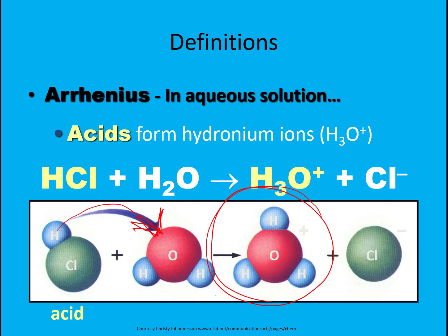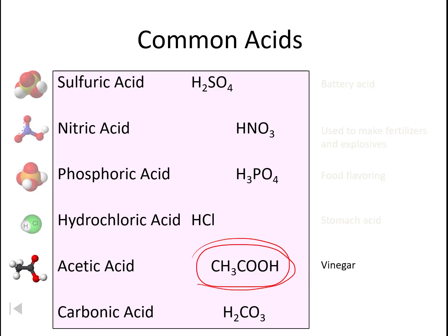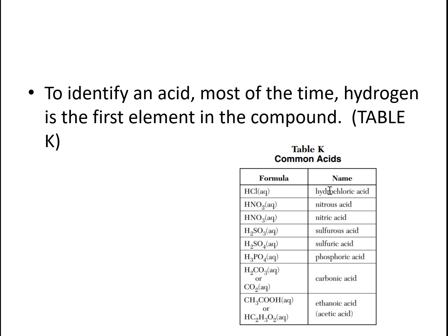There are lots of different Arrhenius acids. Most of these are listed on table K in your reference table. We have things like sulfuric acid, nitric acid, phosphoric acid, hydrochloric acid, acetic acid (also known as vinegar, our most common organic acid), and carbonic acid. Carbonic acid is what you get when you take carbon dioxide and run it through water. To identify an acid, most of the time hydrogen will be the first element in the compound. If you look at table K, you can see this is true.